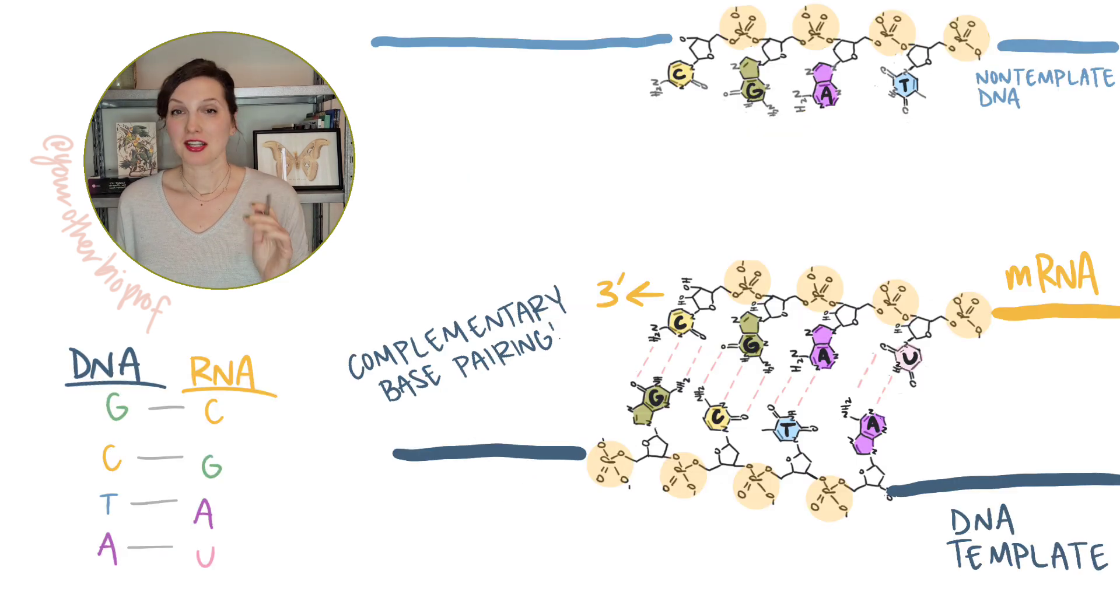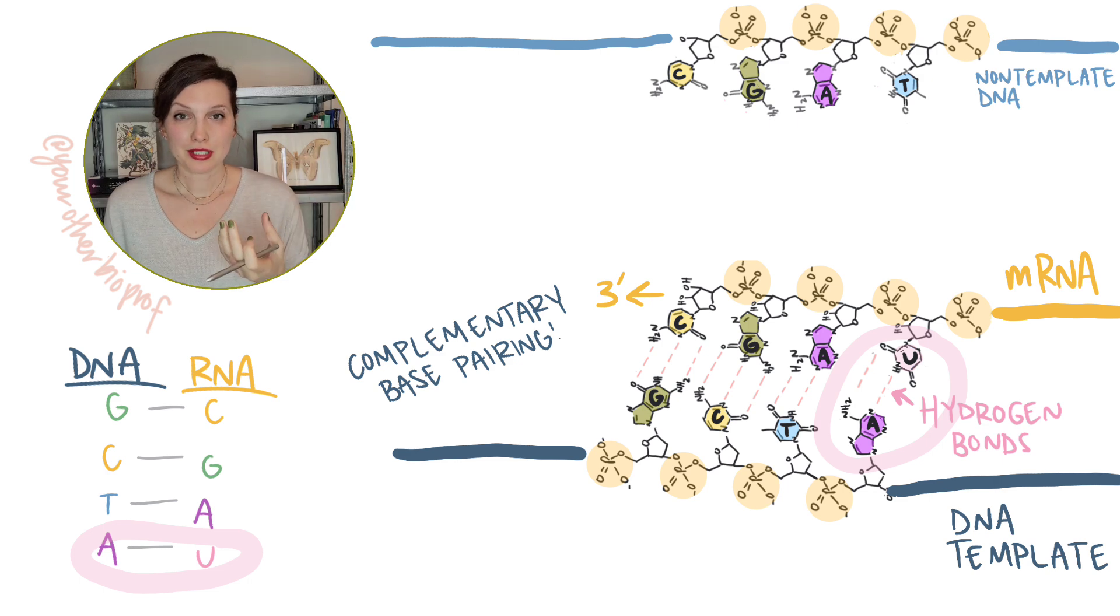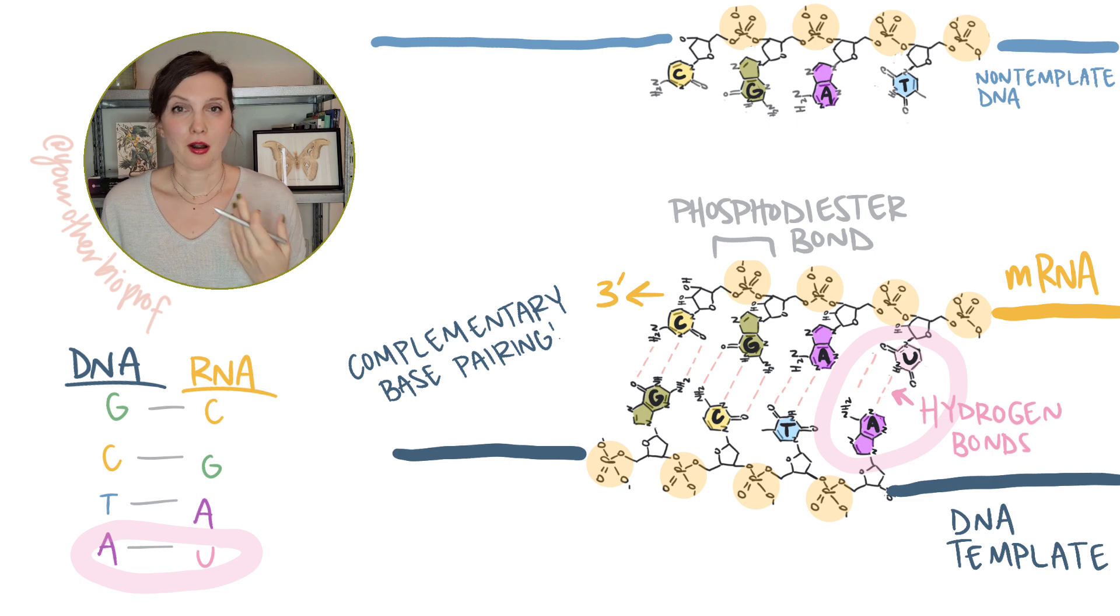C pairs with G, G pairs with C, T pairs with A. But remember that RNA uses uracil, U, instead of thymine, T. That means that an A in the DNA will be paired with a U in the RNA. And just like with DNA, these are going to have hydrogen bonds between them. The new nucleotides are going to be connected to your RNA strand by RNA polymerase creating phosphodiester bonds.